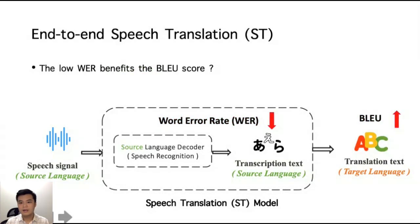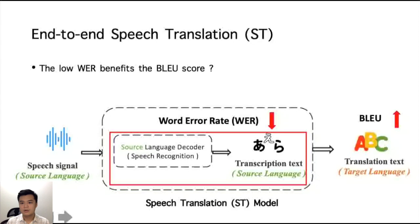However, word error rate does not necessarily correlate to the BLEU score. ST is a translation task. We wonder if there is another feature more important than the recognition quality. Maybe the semantic information will be the one to help on the final translation quality.